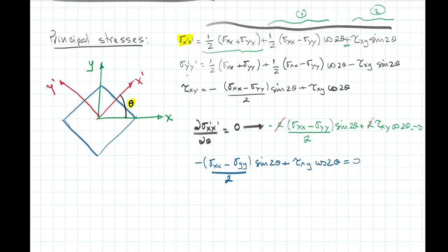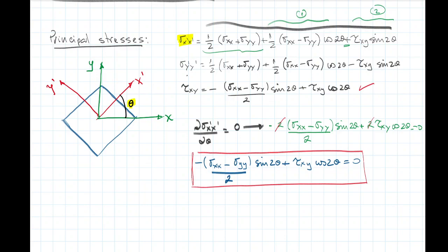Now, if we pay attention to this resultant equation, you are going to see that this equation is similar to the one for the shear stress. It means that at the angle that produces the maximum normal stress, we are also going to have zero shear stress, because this equation equals the shear stress expression.